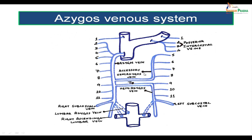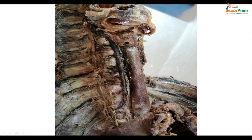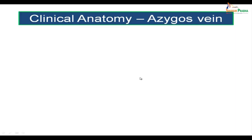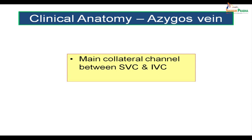The azygous vein is the main collateral channel between the superior and inferior vena cava. Due to this communication, the azygous veins and posterior intercostal veins can enlarge in case of obstruction of the superior or inferior vena cava, resulting in notching of the ribs.